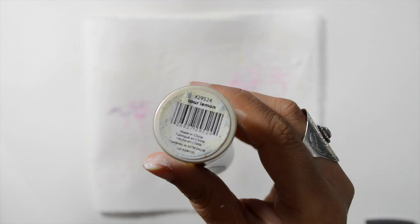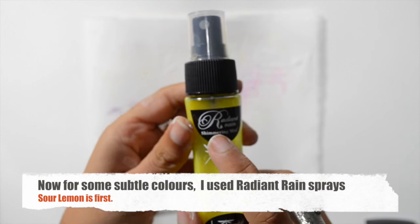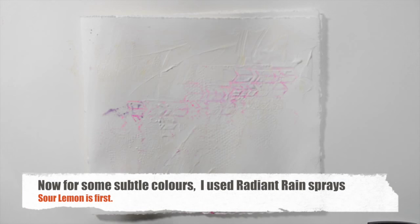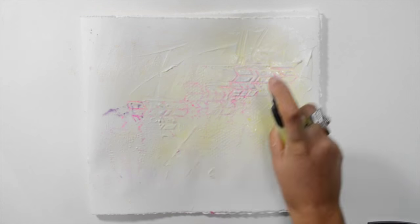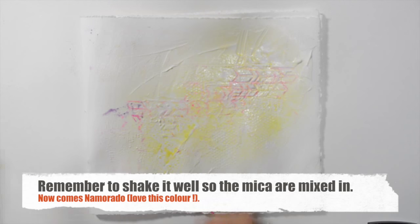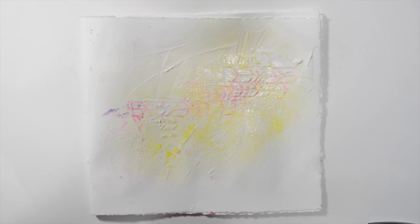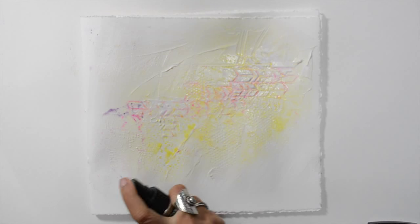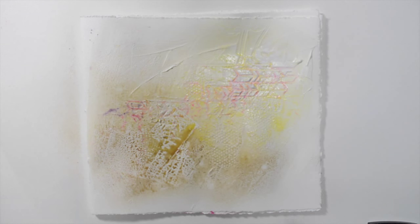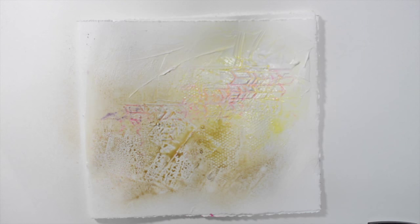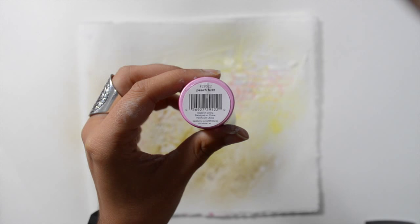Now adding some color. I'm using the Radiant Rain sprays by ColorArte and I wanted it to be a soft page, so using the lightest of the yellow which is Sour Lemon. And now one of my favorite colors of the line called Namorado, which is a soft brown with golden and pink shimmer to it. This is for later, you'll see.